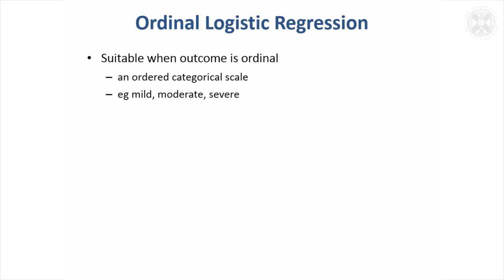I will move on now to ordinal logistic regression. There's a nice trick you can apply to the logistic regression model to make it suit ordinal outcomes. If you remember from previous sessions, that's an ordered categorical scale, and an example might be severity of a symptom measured as mild, moderate, or severe.